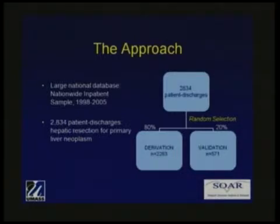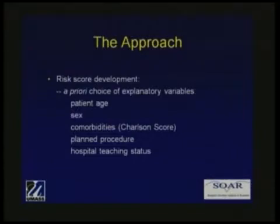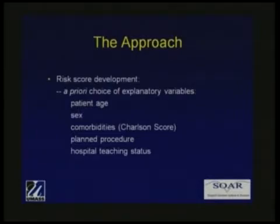Liver transplant was not included in this cohort. Of the 2,834 patients identified, we used a random sampling algorithm to create two cohorts: 80% became the derivation set and the remaining 20% were set aside as the validation set. We chose the following explanatory variables a priori: age, grouped into categories; comorbidities using the Charlson Index, which assigns weights to comorbid conditions including two categories of liver dysfunction — mild to moderate or severe; planned procedure, grouped as RFA and enucleation, wedge resection and lobectomy; and the teaching status of the hospital.